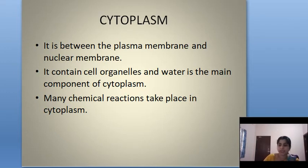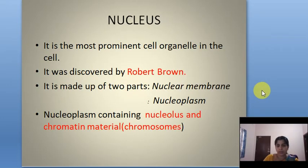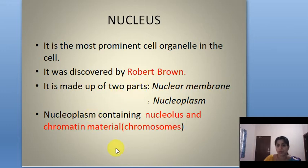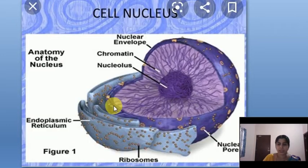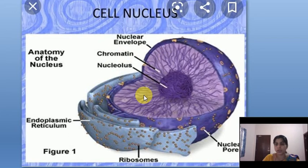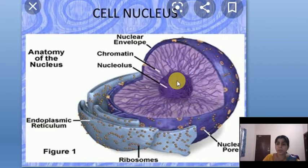Next we discuss the nucleus. It is the most prominent cell organelle in the cell. It was discovered by Robert Brown. It is usually spherical or oval in shape. The nucleus is the brain of the cell — it controls all the reactions that occur in the cell and regulates all functions of the cell, just like your brain controls all body functions.